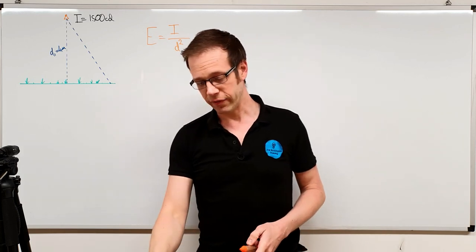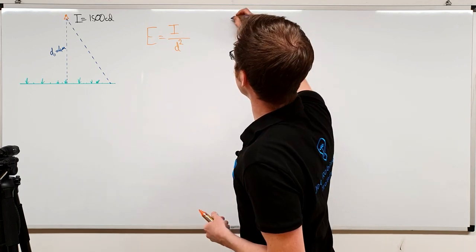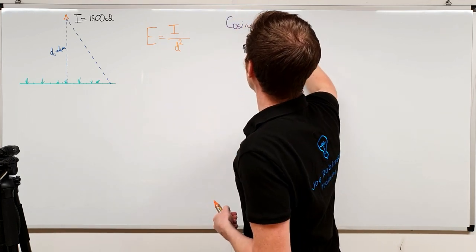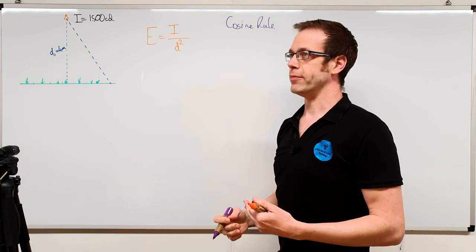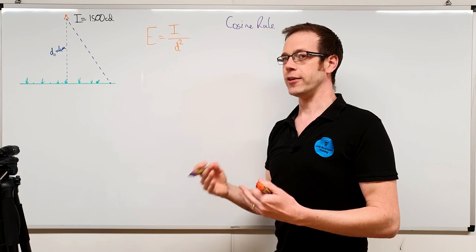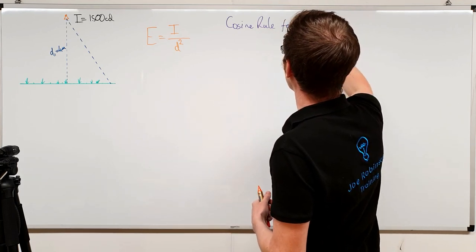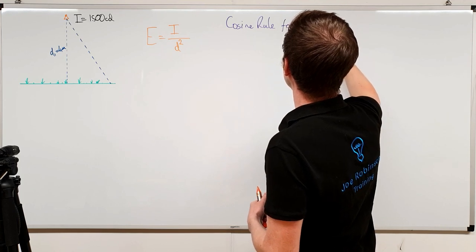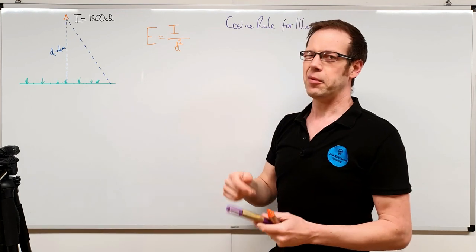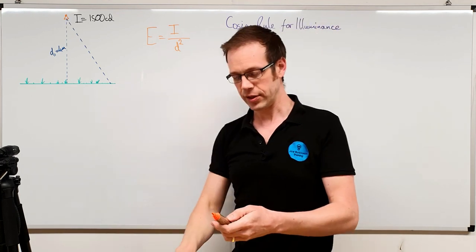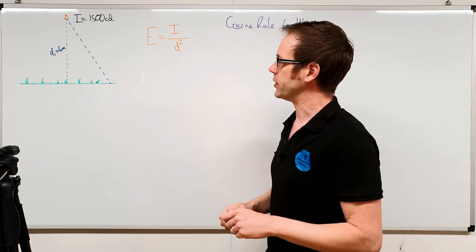We're going to explore that now and have a look at something referred to as the cosine rule. If you go to Google and type in cosine rule, you'll get lots of results relating to triangles, but not necessarily this specifically. So if you type in 'cosine rule for illuminance' or 'cosine rule for lighting', you'll get more information on the correct topic you're searching for.